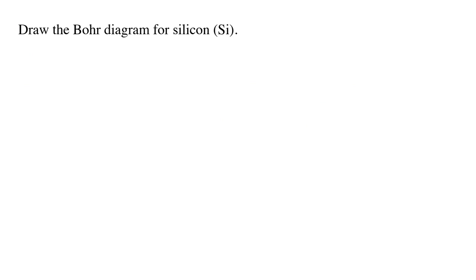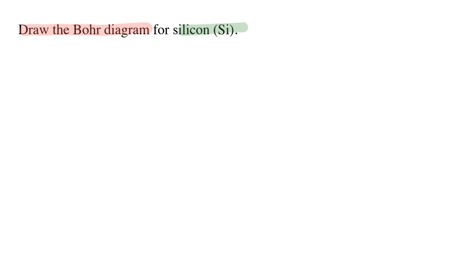Here's the kind of question you would need to solve for your chemistry class. Draw a Bohr diagram for silicon. A Bohr diagram is a representation of electrons around the nucleus of an atom. It's based on the Bohr model of the atom.